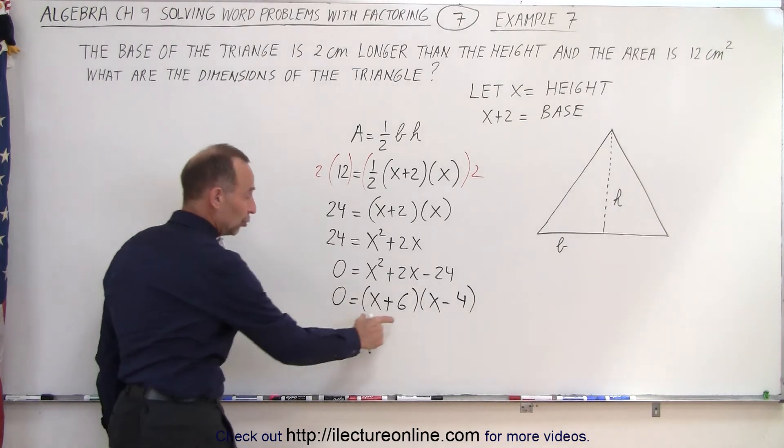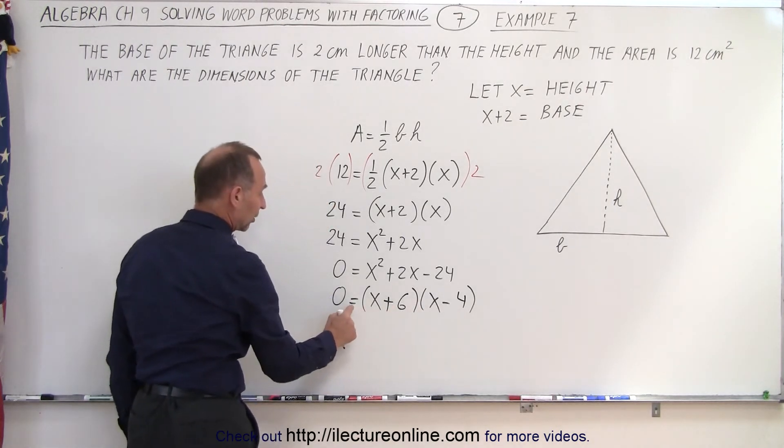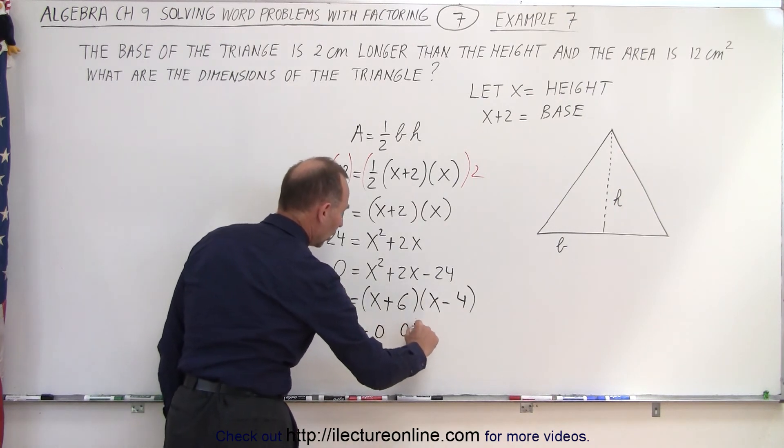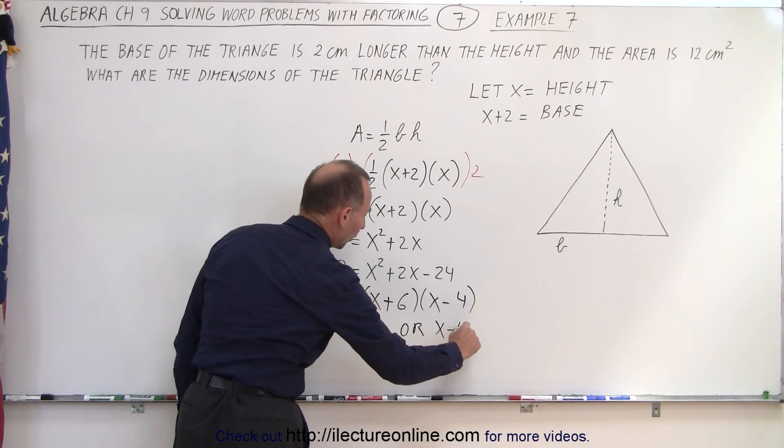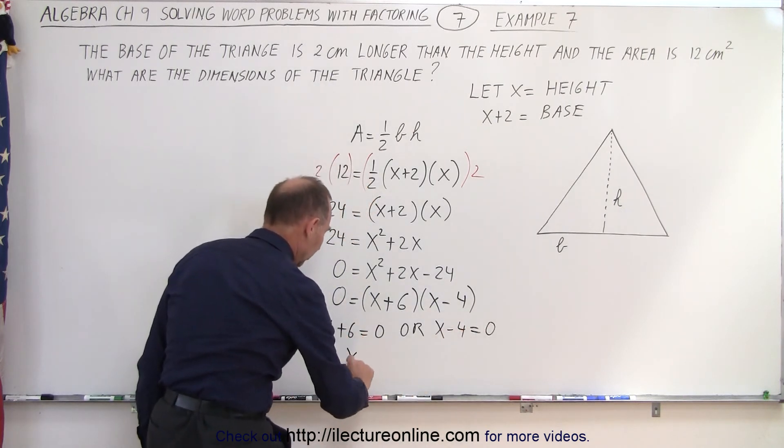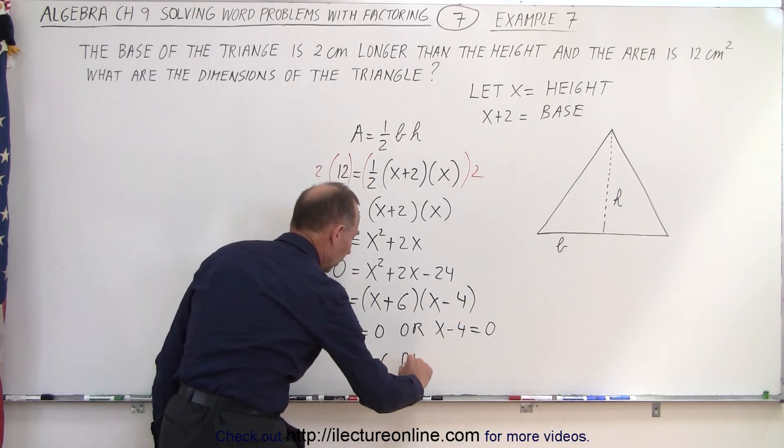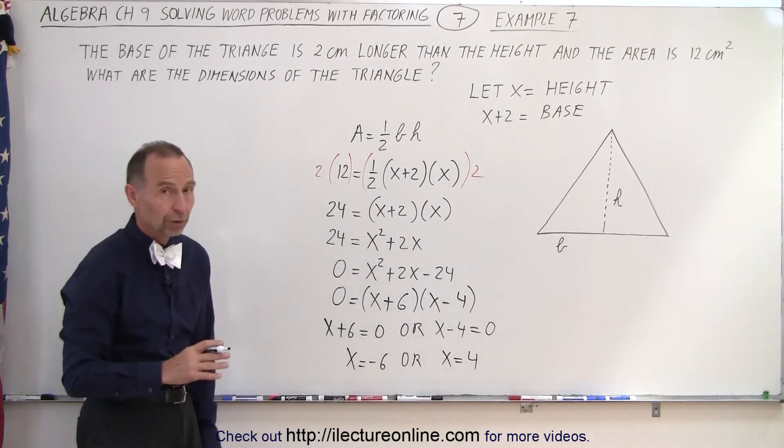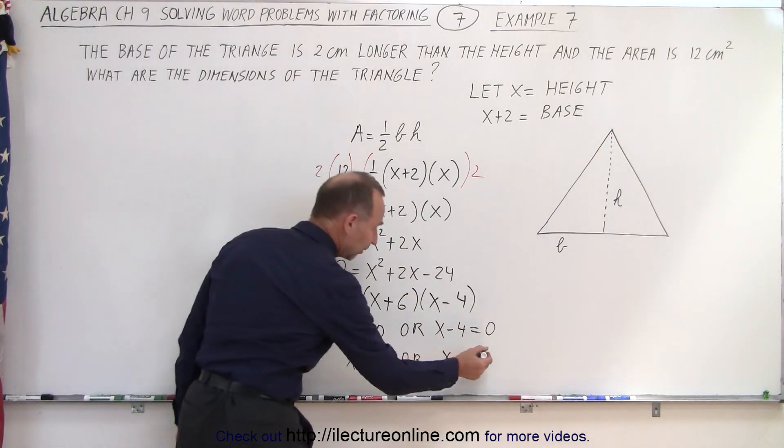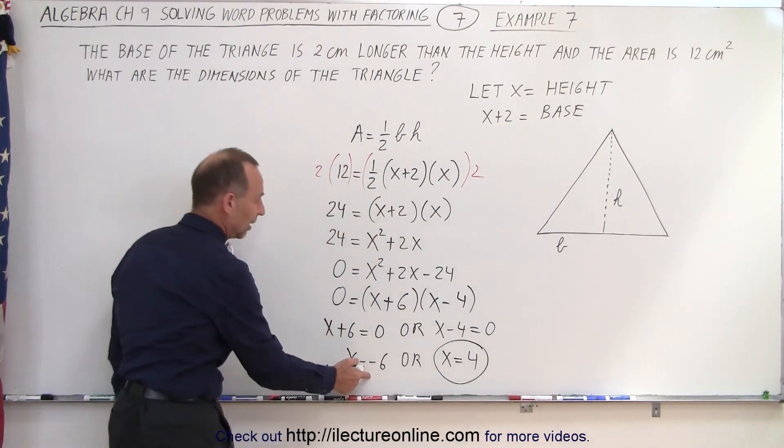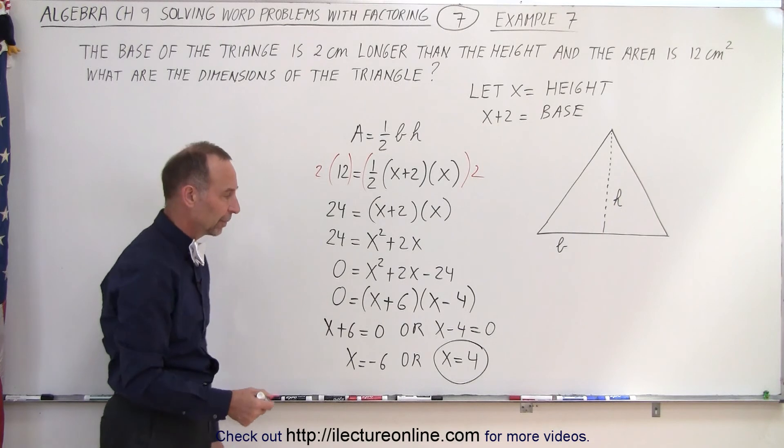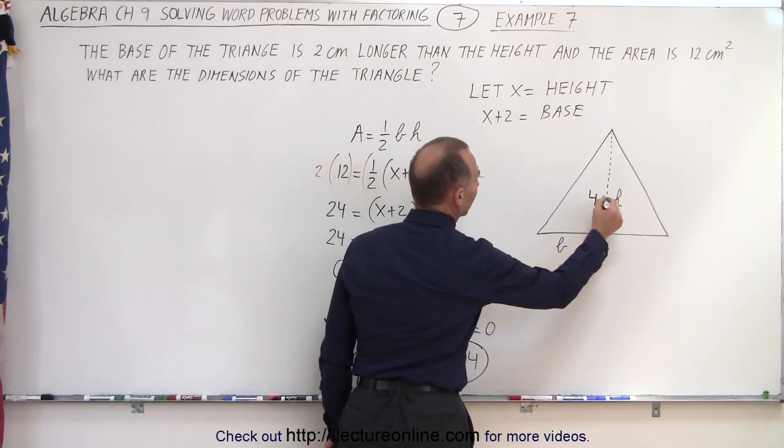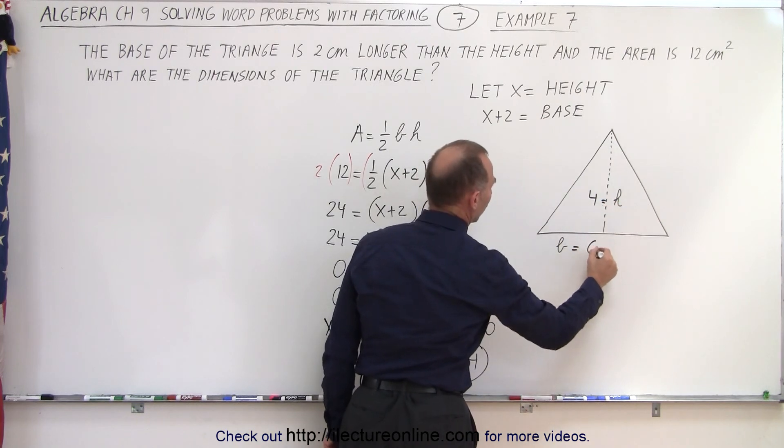If we multiply two binomials and that product equals 0, that means that either x plus 6 must equal 0 or x minus 4 must equal 0, which means that either x equals minus 6 or x equals a positive 4. But since we're looking for dimensions of a triangle, only the positive solution can be correct because we can't have negative lengths, which means that the height is equal to 4 and the base is equal to 6.